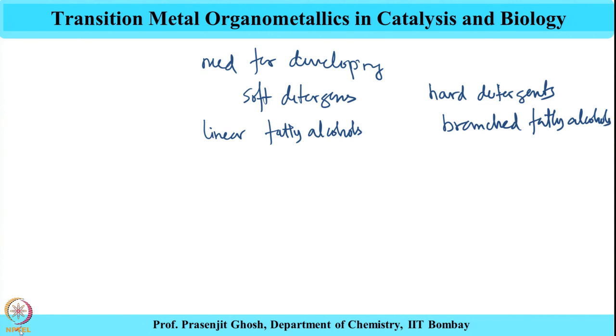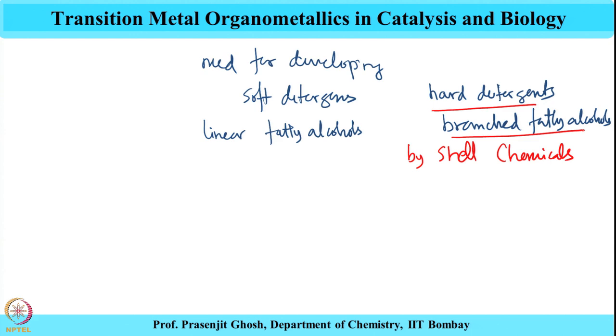These branched fatty alcohols were being sold by Shell Development — Shell Chemicals. These hard detergents are branched long-chain fatty alcohols with alcoholic ends. They were causing a lot of deposition of foams and surfactants on rivers, creating a biological and ecological problem. Because of lack of any method for their degradation, there was a need to develop soft detergents having linear fatty alcohols. That is how the story starts.